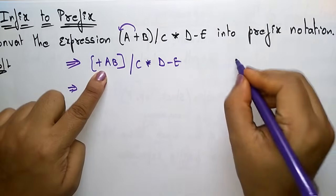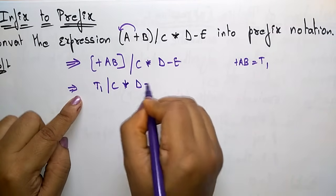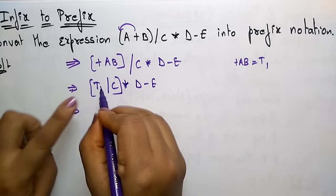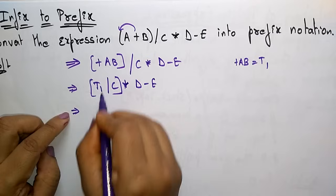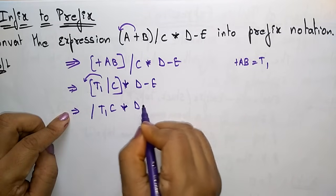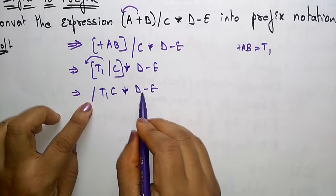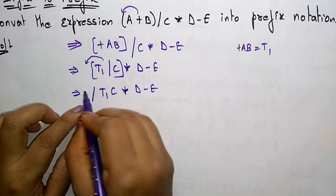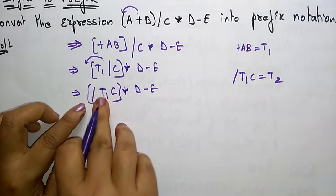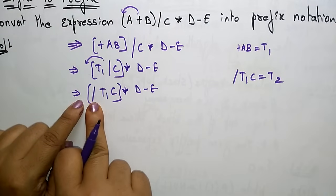Now I want to replace plus A B as T1. Substitute: T1 by C star D minus E. This becomes one expression with two operands and one operator. Apply the prefix notation: division T1 C, then star D minus E. Division T1 C is now replaced with T2, since I already converted it into prefix. So now: T2 star D minus E.